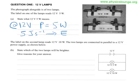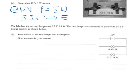The label on the second lamp reads 12 volts 18 watts. The two lamps are connected in parallel to a 12 volt power supply as shown below. State which of the two lamps is brighter and give reasons.